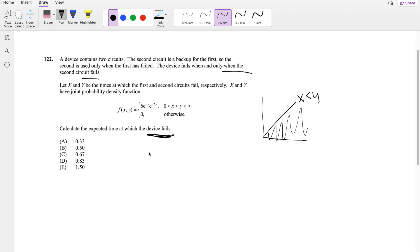So they're basically asking you to find the expected value of y, where y is when the second circuit fails. So then this is equal to y times f(y), the marginal distribution of y. But because they give you f(x,y), the joint distribution, we have to find the marginal distribution first.